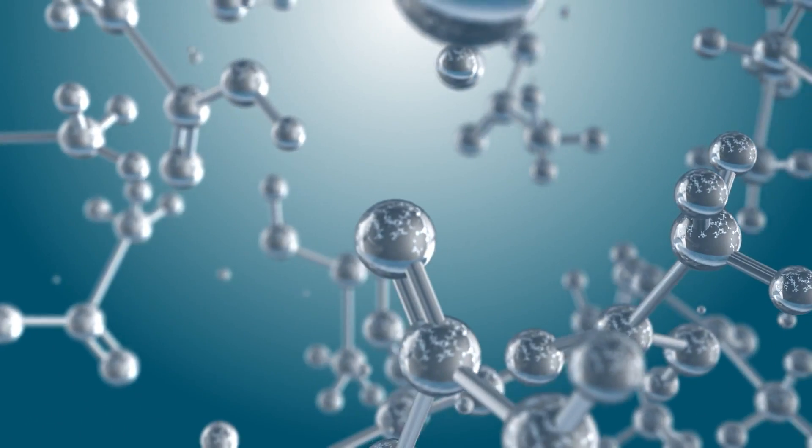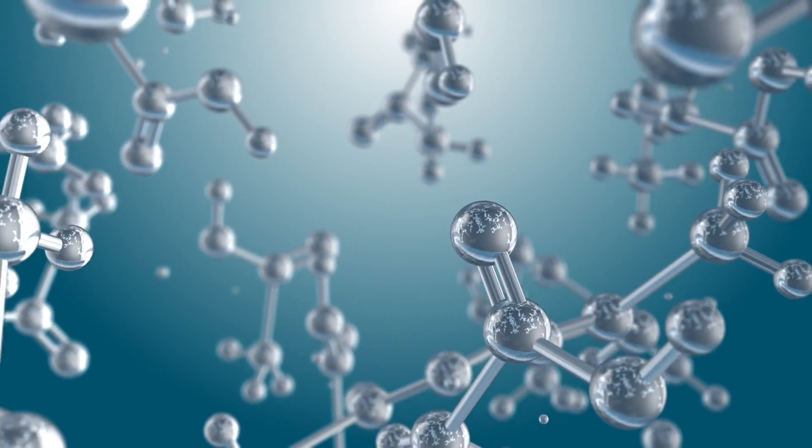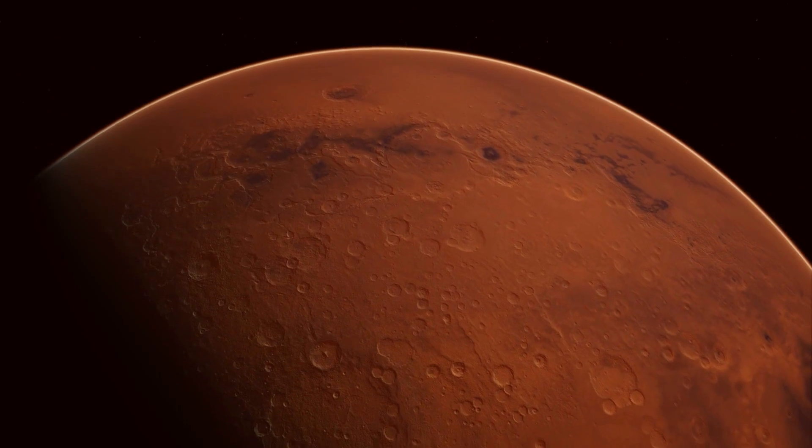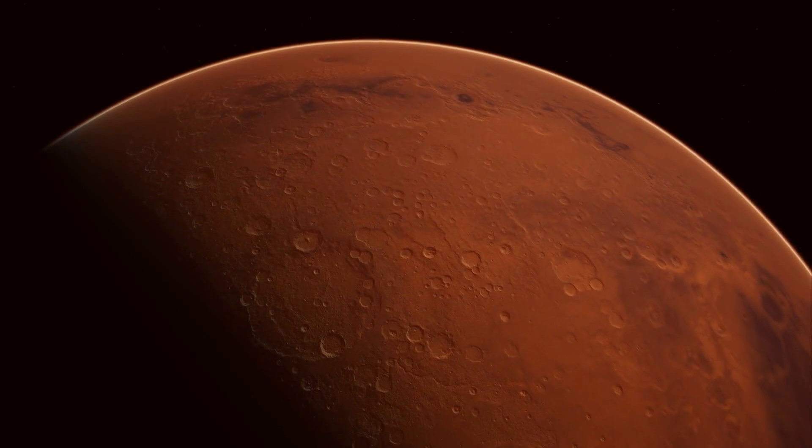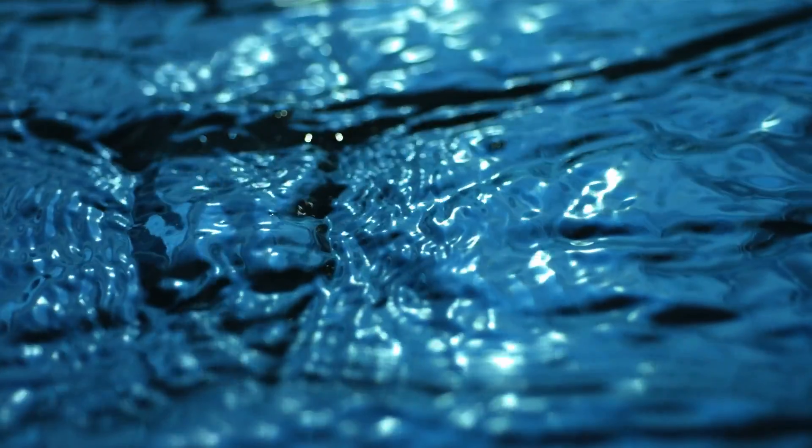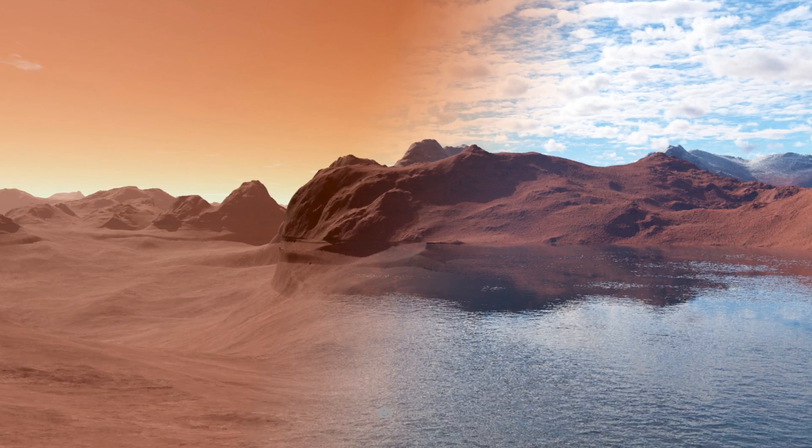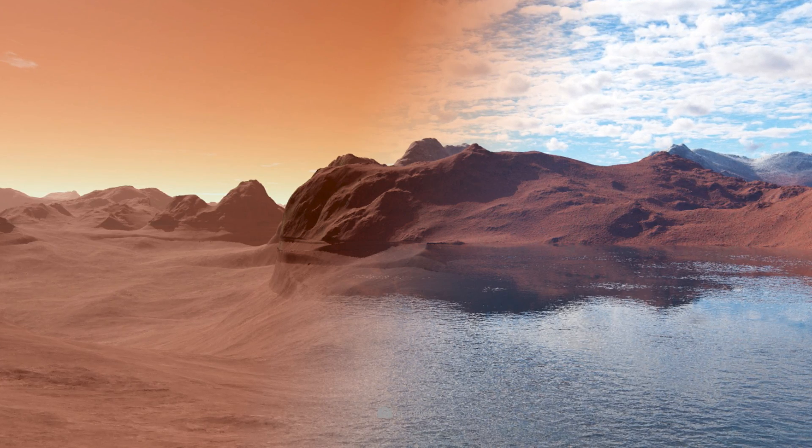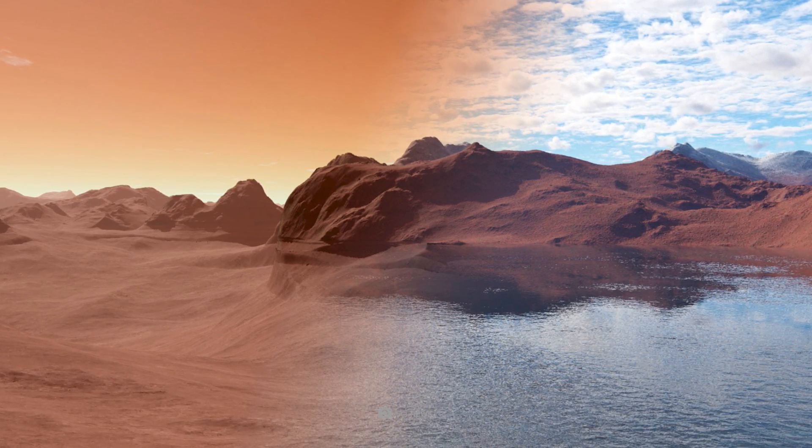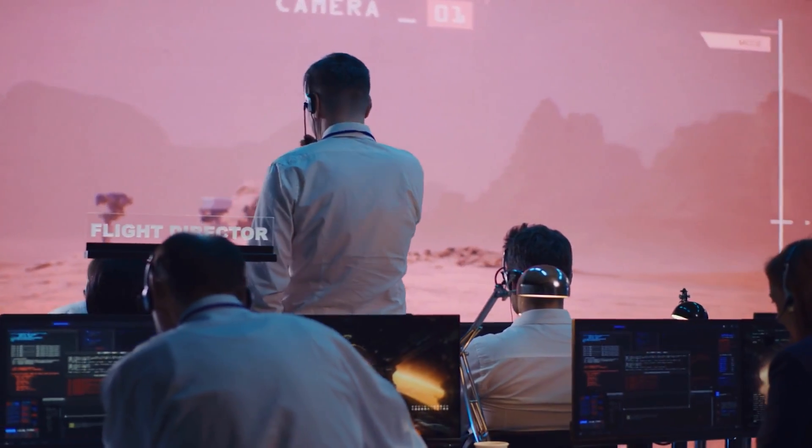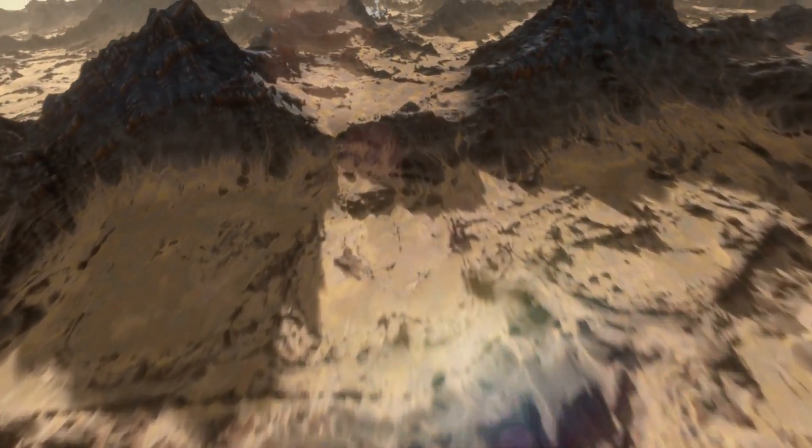This led to the release of gas molecules, including lighter elements such as hydrogen and helium, into space. The changes in the atmosphere, in turn, had an impact on the surface of Mars. While liquid water may have existed on Mars in the past, it largely evaporated or escaped into space due to the loss of the atmosphere and protection from solar winds.